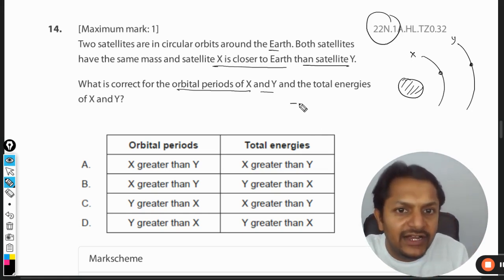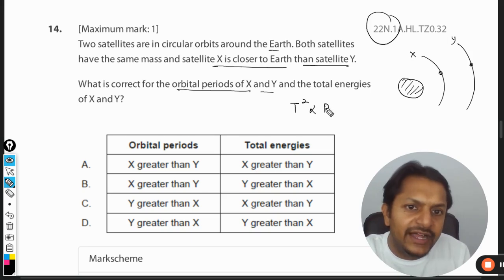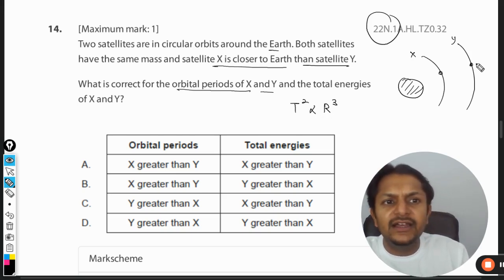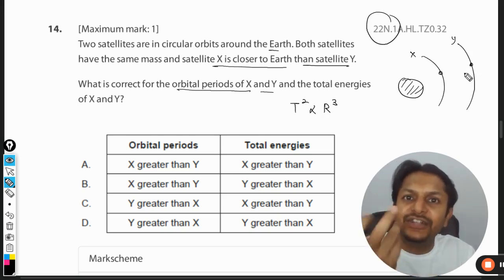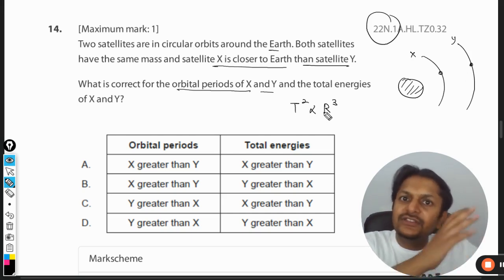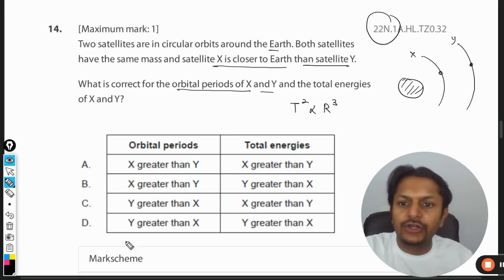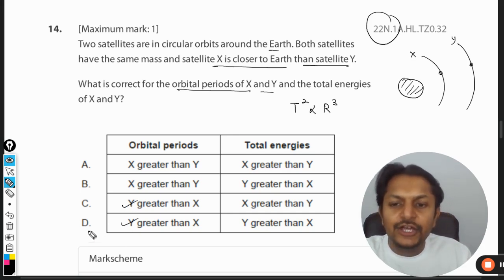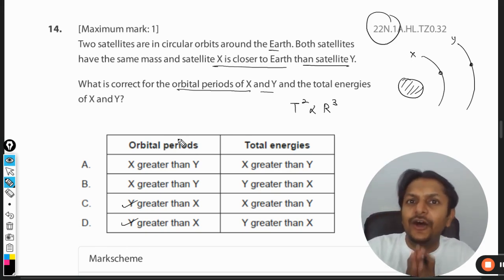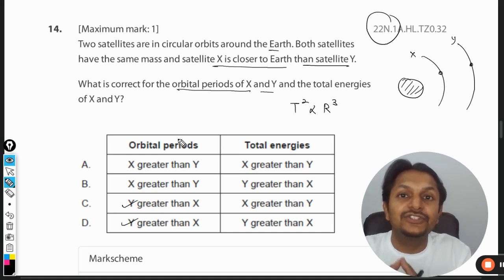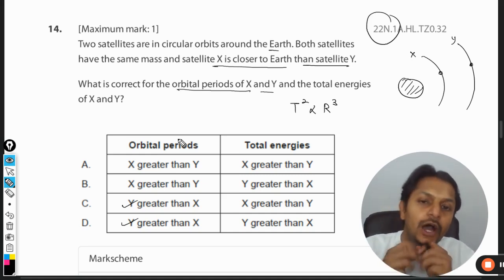We can directly use T² is directly proportional to R³. Clearly, Y is going to have bigger time, because time is directly proportional to R. So more is the radius, more is the time - no doubt about it. So Y is greater than X. This first question about the orbital period can very easily be answered now in the new syllabus because Kepler's law can be used.